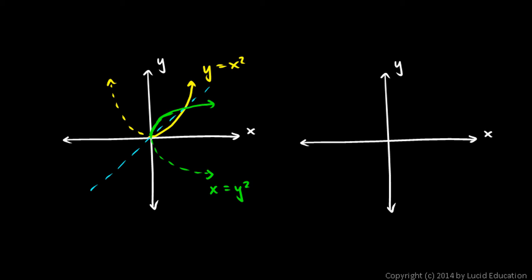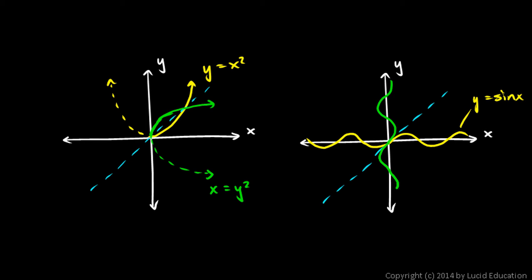A similar example would be the sine function. Look at y equals sine x — let's draw it something like this. That's y equals sine x. If we reflect this across the line y equals x, the reflection is going to look like this. That would be the equation x equals sine y, which is equivalent to y equals the inverse sine of x. So y equals inverse sine of x, or x equals sine y — those are the same. These curves, of course, continue on indefinitely. When we actually deal with these functions, we would typically restrict our domain to just a tiny section of the sine curve.